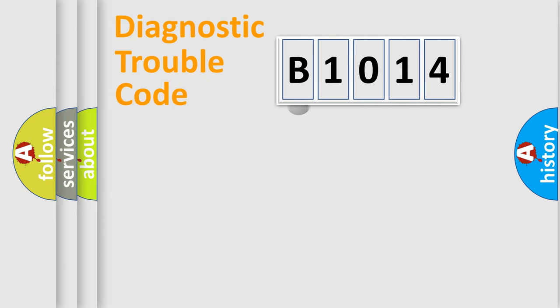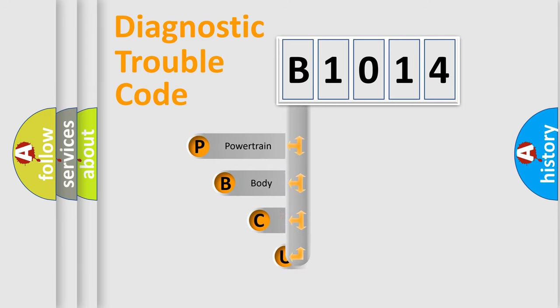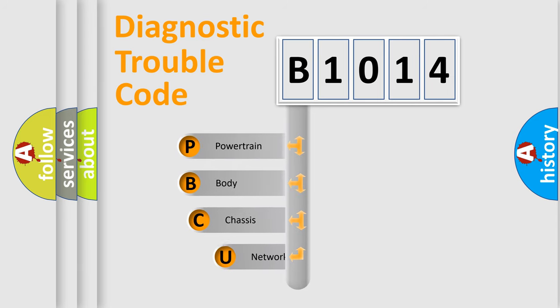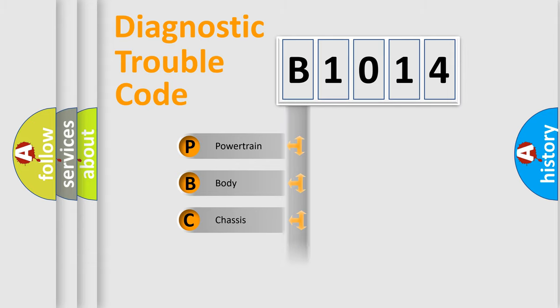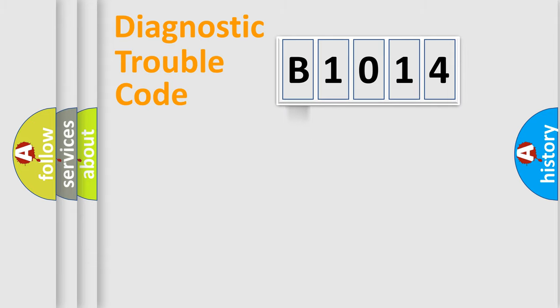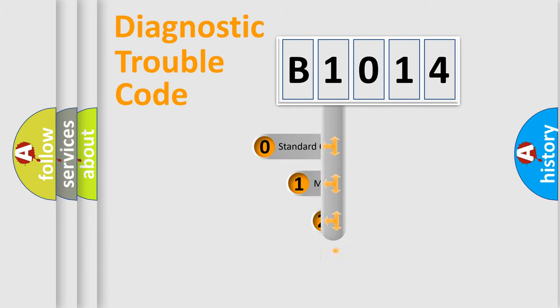First, let's look at the history of diagnostic fault code composition according to the OBD2 protocol, which is unified for all automakers since 2000. We divide the electric system of an automobile into four basic units: Powertrain, Body, Chassis, and Network. This distribution is defined in the first character of the code.